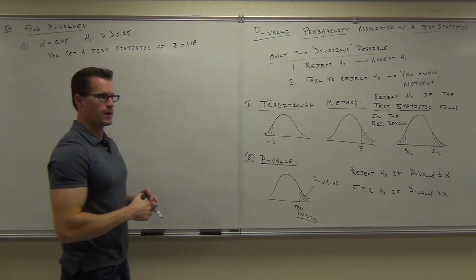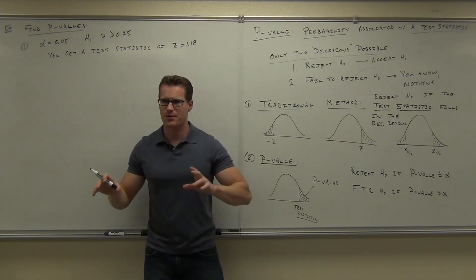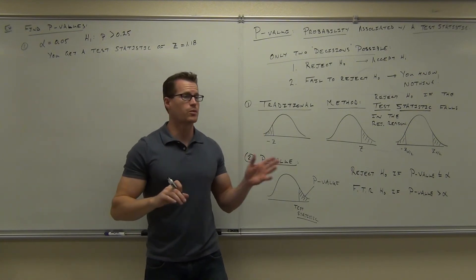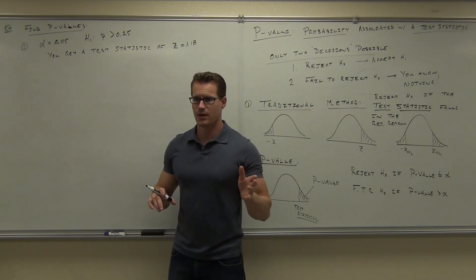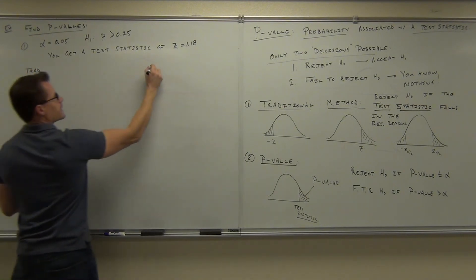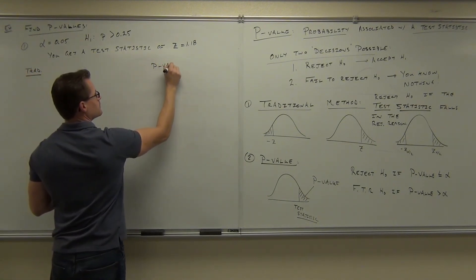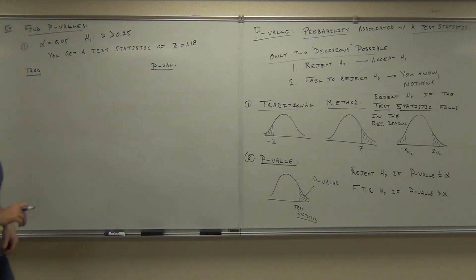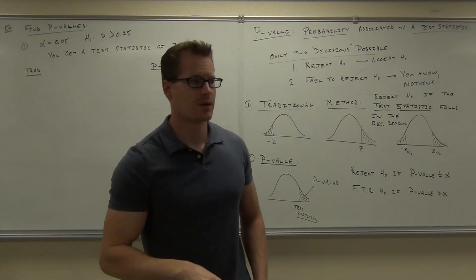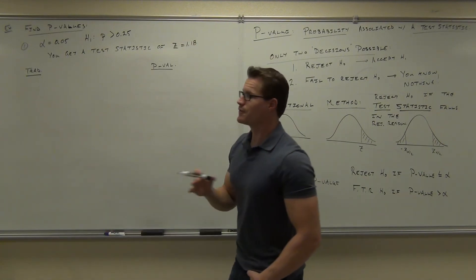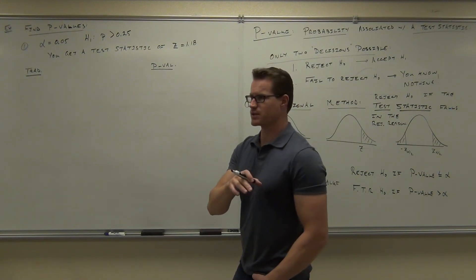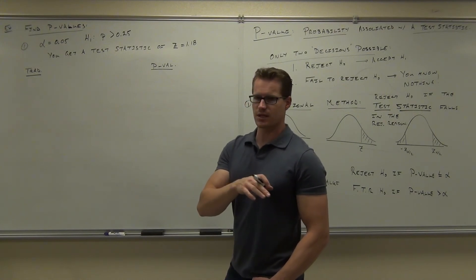Would you like to see a comparison between the P-value method and the traditional method? You could do this both ways. On the left-hand side we'll do traditional, on the right-hand side we'll do the P-value method. The first thing you need to do in each case is determine whether you're talking about a left-tail, right-tail, or two-tail test. In this example, it's a right-tail test — you can tell just by looking at H₁.